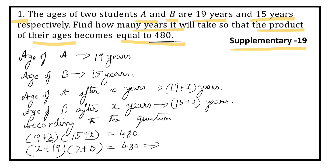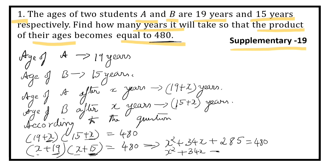Now let us use the formula X plus A into X plus B. Here A plus B is 19 plus 15, that is 34. So we get X square plus 34X plus 19 into 15, which is 285. Now let us write it in the standard form: X square plus 34X minus 480.